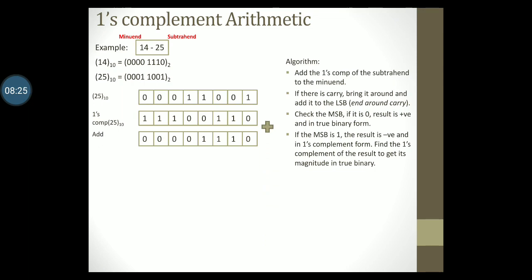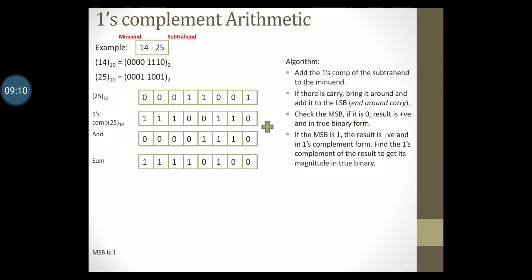Adding them up: 0 plus 0 is 0; 1 plus 1 is 0 carry 1; 1 plus 1 plus 1 is 1 carry 1; 1 plus 1 is 0 carry 1; 1 plus 0 is 1; 1 plus 0 is 1; 1 plus 0 is 1; and 1 plus 0 is 1. This is the sum. Referring to the next step in the algorithm: if there is a carry, bring it around and add it to the LSB. But in this case there is no carry, so we move to the next step, which tells us to check the MSB.